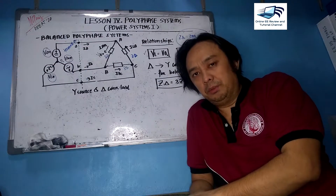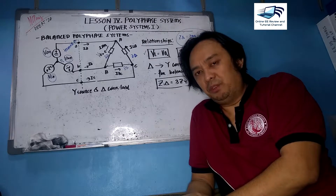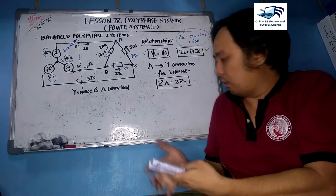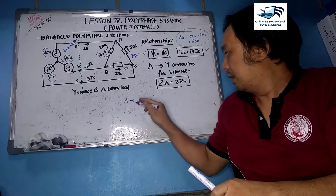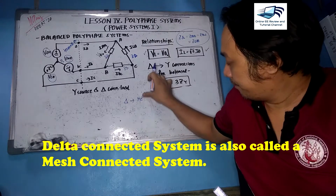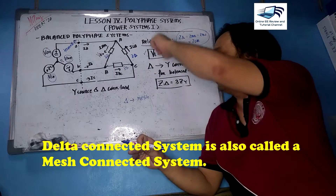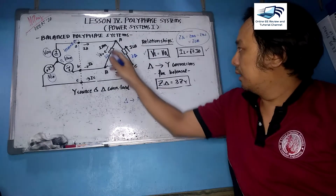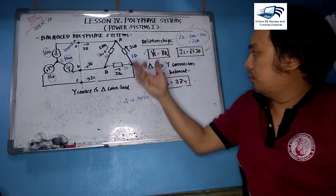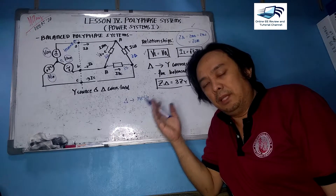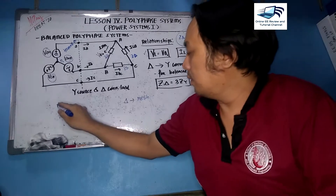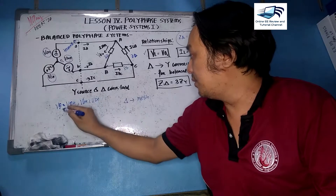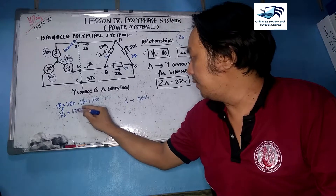Now we will discuss the second type of connection of a balanced polyphase system. From the first part we discussed the Y-connected system; now we cover the delta-connected system, which is also called a mesh-connected system. It is shaped like a triangle, as you can see here. The impedances Z-delta are the same because they are connected in delta and are balanced.